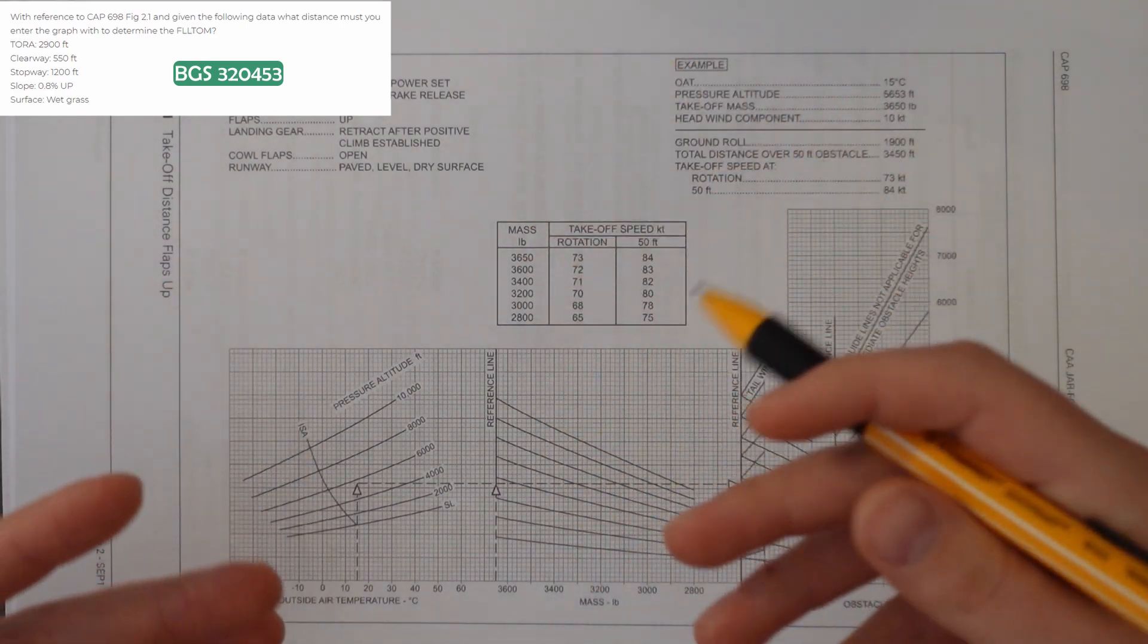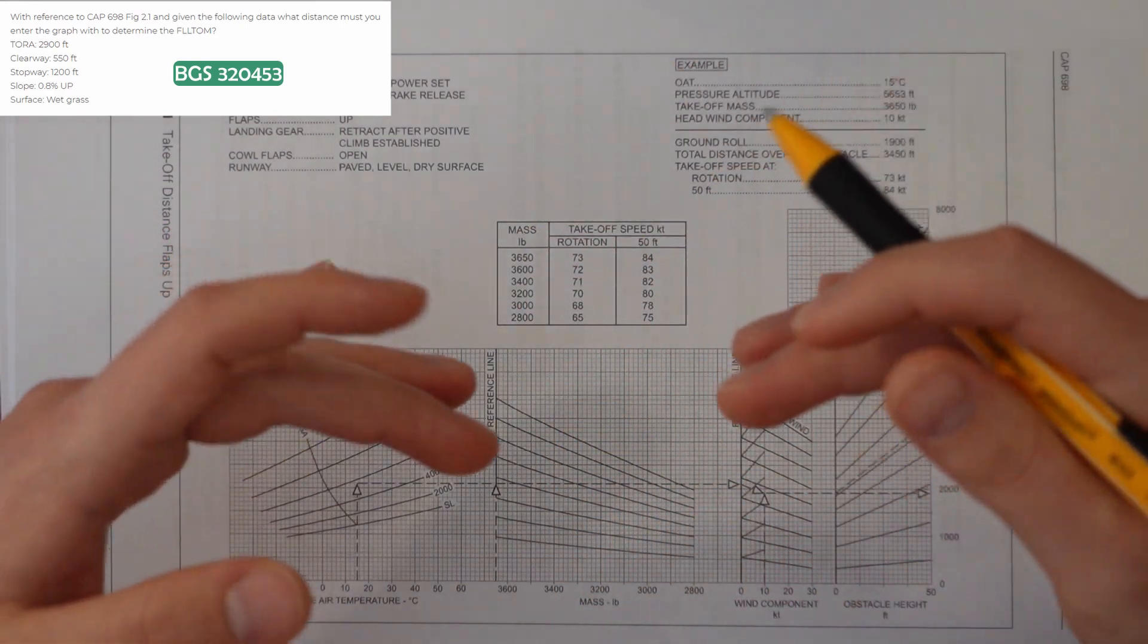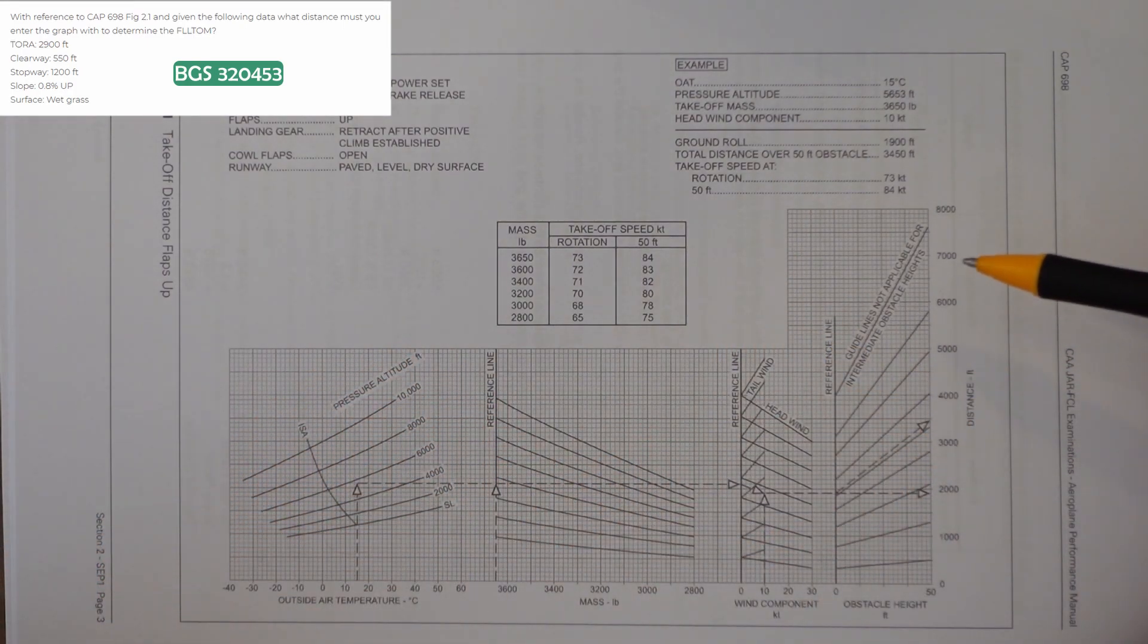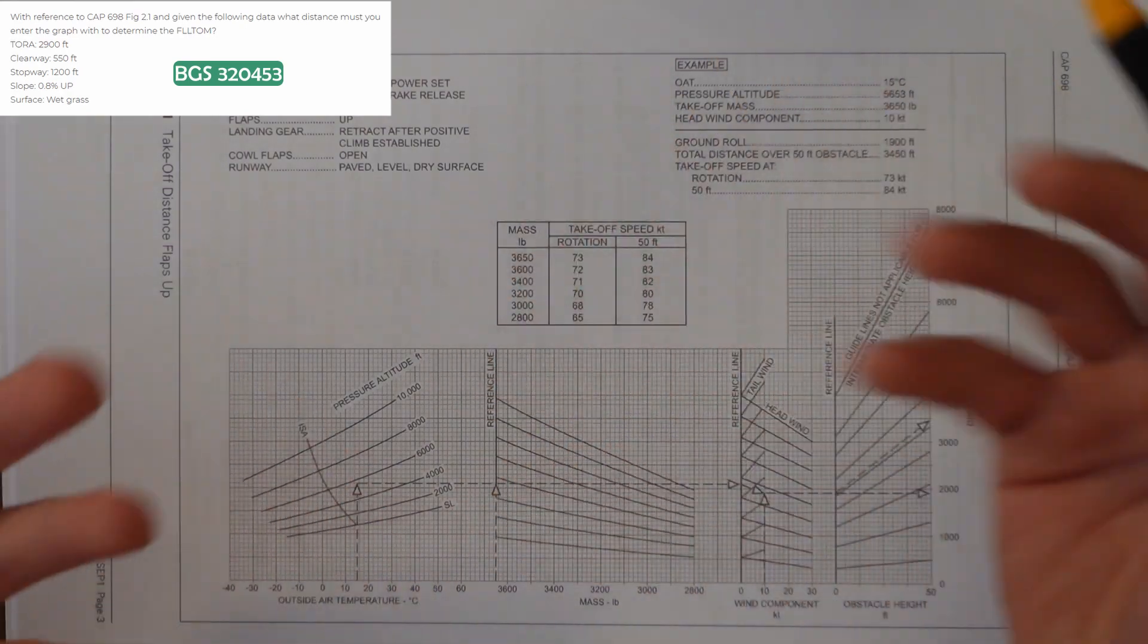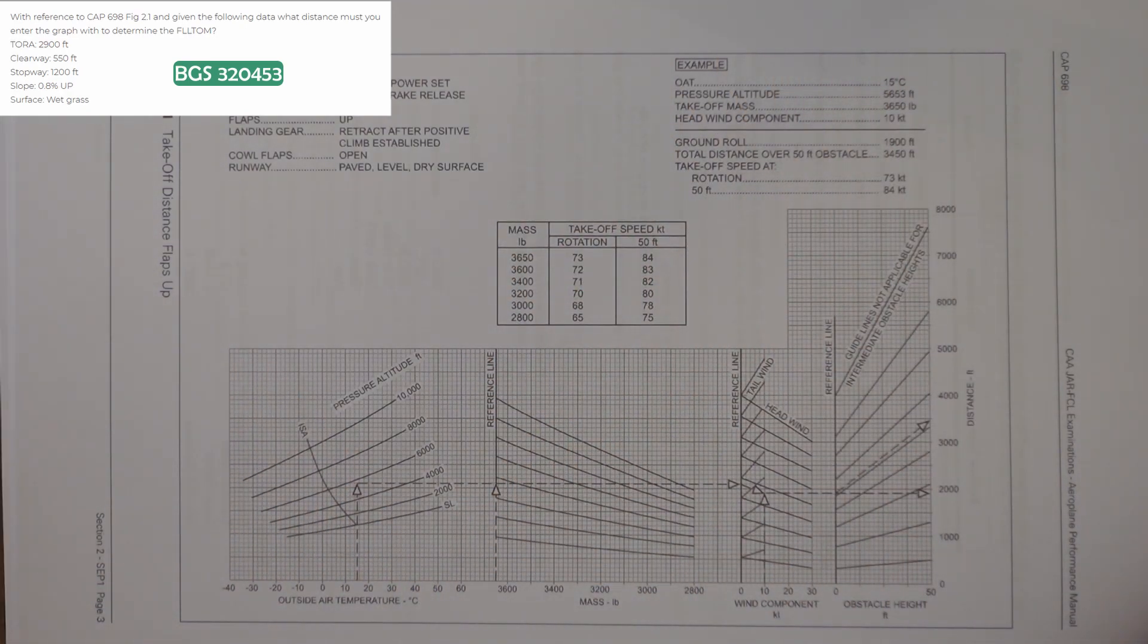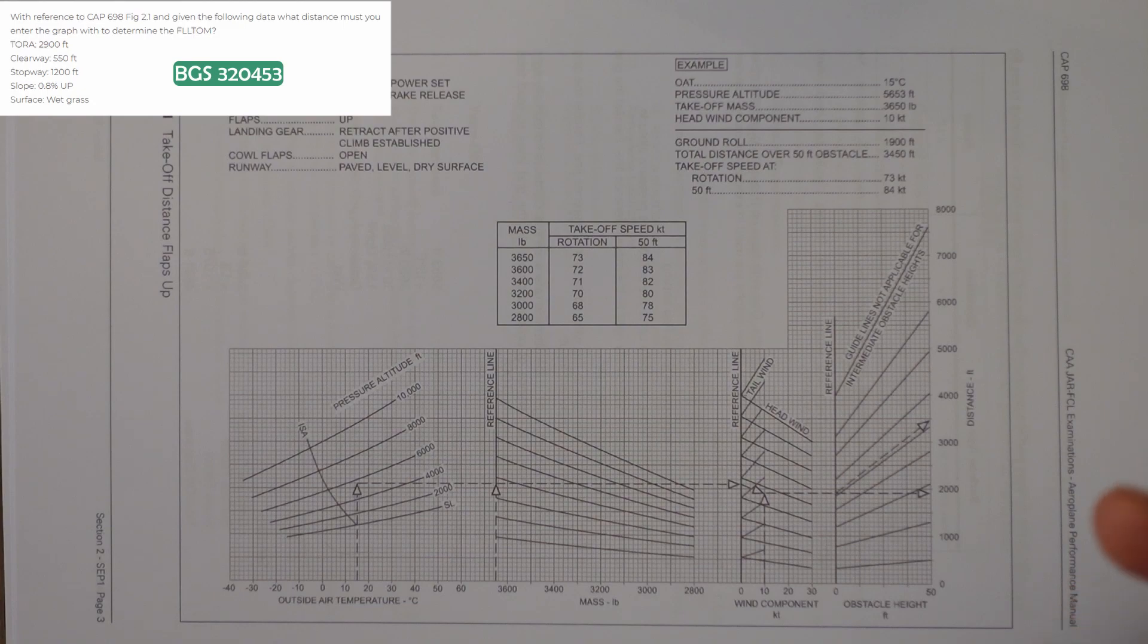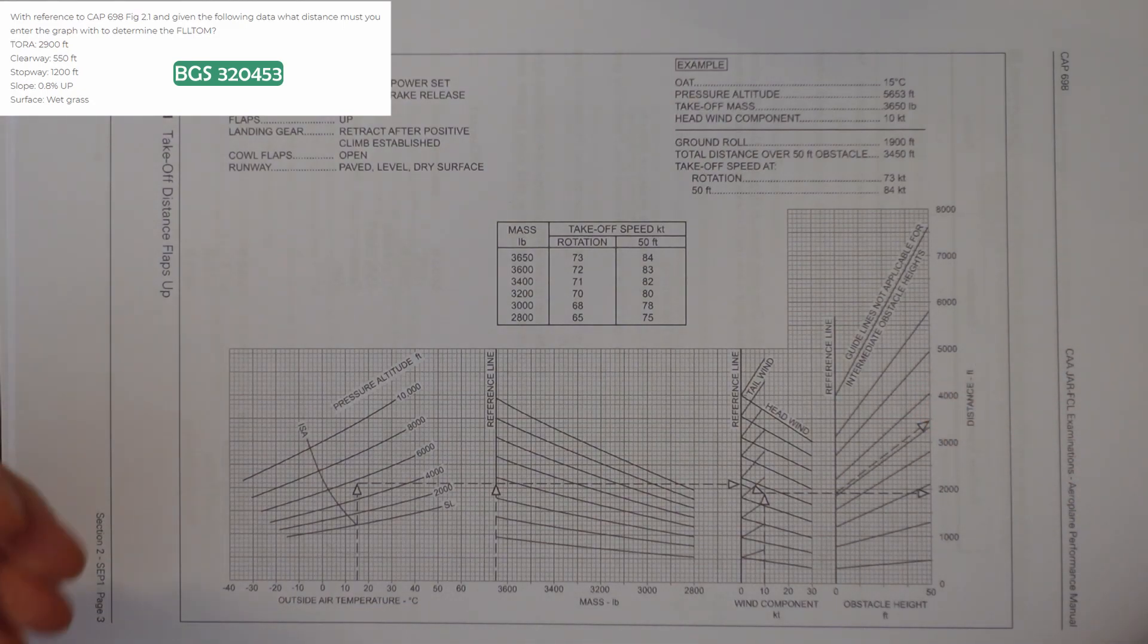We're just figuring out what we need to enter on this side of the graph so that we could make that work if we need to. So the factors that we need to apply because we have a stopway and a clearway are as follows.